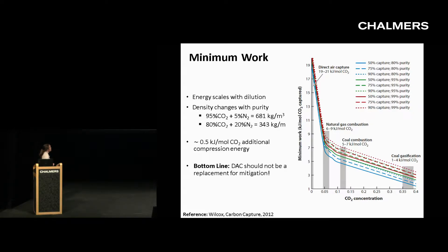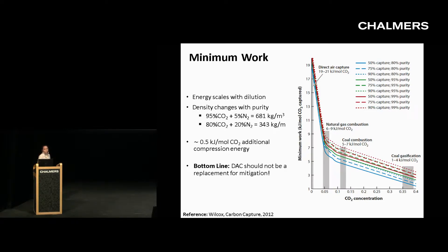With direct air capture, looking at 50% all the way up to 90% capture, and purity ranging from 80% to 99%, on average the minimum work for separation is about 20 kilojoules per mole of CO2. And we can see that as you increase the concentration of CO2 — going from natural gas exhaust to coal-fired power plants to even gasification — that minimum work significantly decreases.